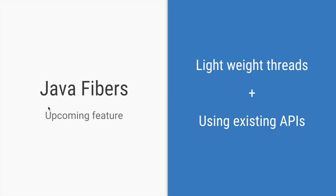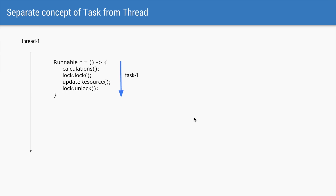What we ideally want is a concept with very lightweight threads that do not consume a lot of memory, while still allowing us to use the existing APIs. That is exactly the problem that an upcoming Java feature called Java Fibers is trying to solve.